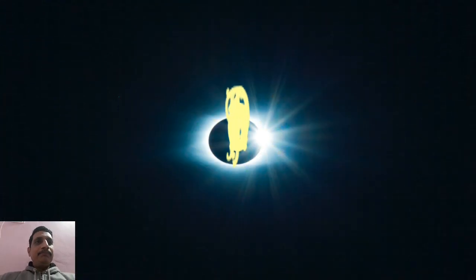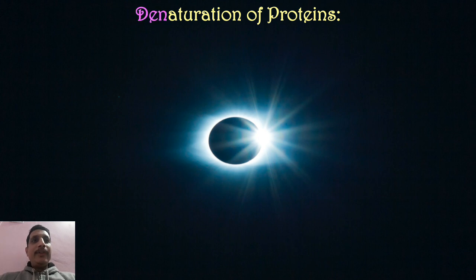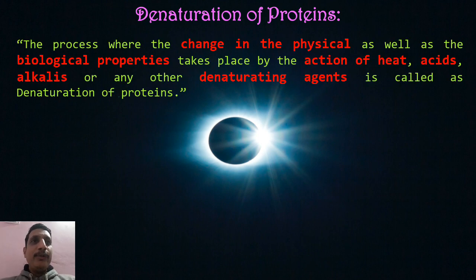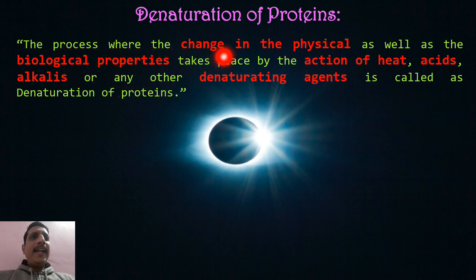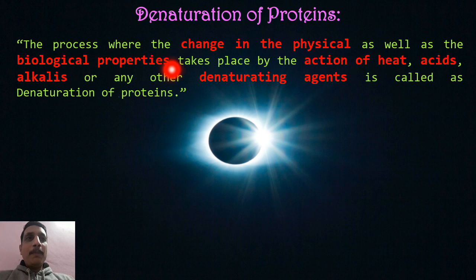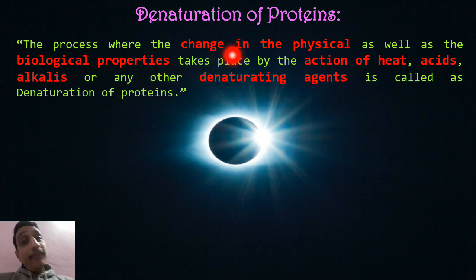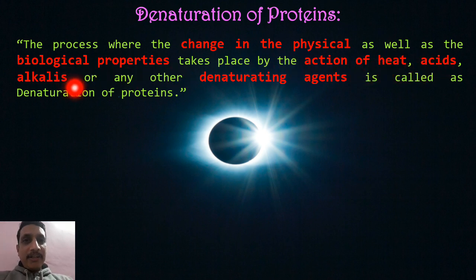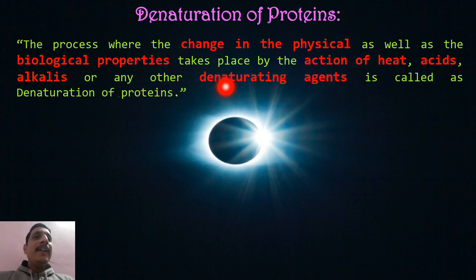We will see the last concept of today's class: denaturation of proteins. It is a property of a protein. Denaturation of protein is the process where there is a change in the physical property as well as the biological property of a protein. It takes place by the action of heat, acid, alkali, or any other agent — those agents are called denaturation agents.